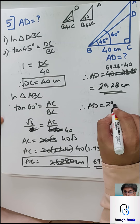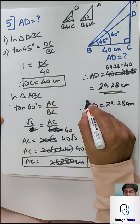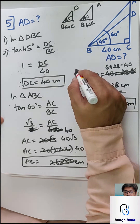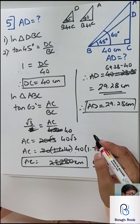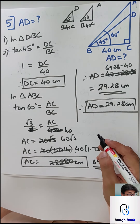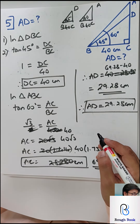So finally AD equals 69.28 minus 40, giving 29.28 centimeters. Therefore AD equals 29.28 centimeters. We found our mistake and saved our time — perfect.